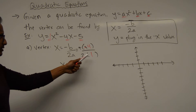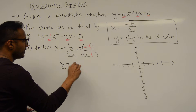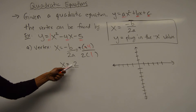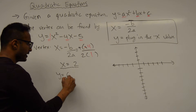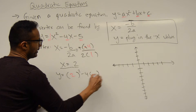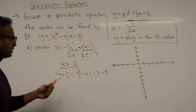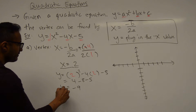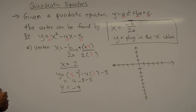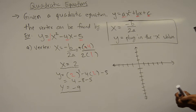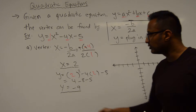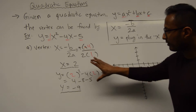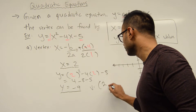We get 4 divided by 2 times 1, which is 2, so the x-value of the vertex is 2. To get the y-value, plug x = 2 into the equation: y = 2² - 4(2) - 5 = 4 - 8 - 5 = -9. The x and y values go together as an ordered pair, so the vertex is written as (2, -9).